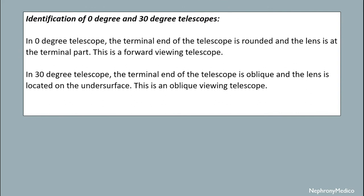Identification of 0 degree and 30 degree telescopes. In the 0 degree telescope, the terminal end is rounded and the lens is at the terminal part — this is a forward viewing telescope. In the 30 degree telescope, the terminal end is oblique and the lens is located on the under surface — this is an oblique viewing telescope.